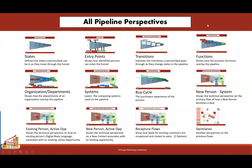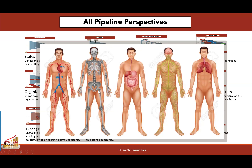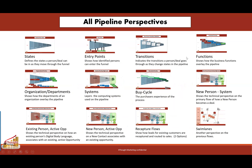Those of you who have engaged with Forethought Marketing in the past may know that we look at the funnel from a bunch of different perspectives — the most common being the state perspective and the audience perspective. But today we're going to focus on the functions, the organizations, the departments, and the systems perspective. All these different perspectives on the funnel are valid in the same way you can look at a human being and think you see them, but there are all sorts of different systems within — the skeletal, cardiovascular, nervous, digestive systems. The same is true with the funnel.